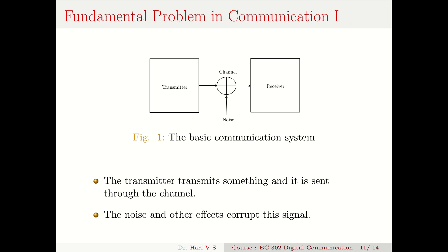Now let us look at what is the fundamental problem in communication. The fundamental problem is: I have a transmitter that gives out some message and sends it through a channel. This channel is very noisy, so the signal will be corrupted by noise and other effects in the channel. What the receiver gets is a corrupted copy of the transmitted signal. What it can do is estimate the transmitted signal based on the observation — and that observation is the received signal, which is a corrupted copy of the transmitted signal.